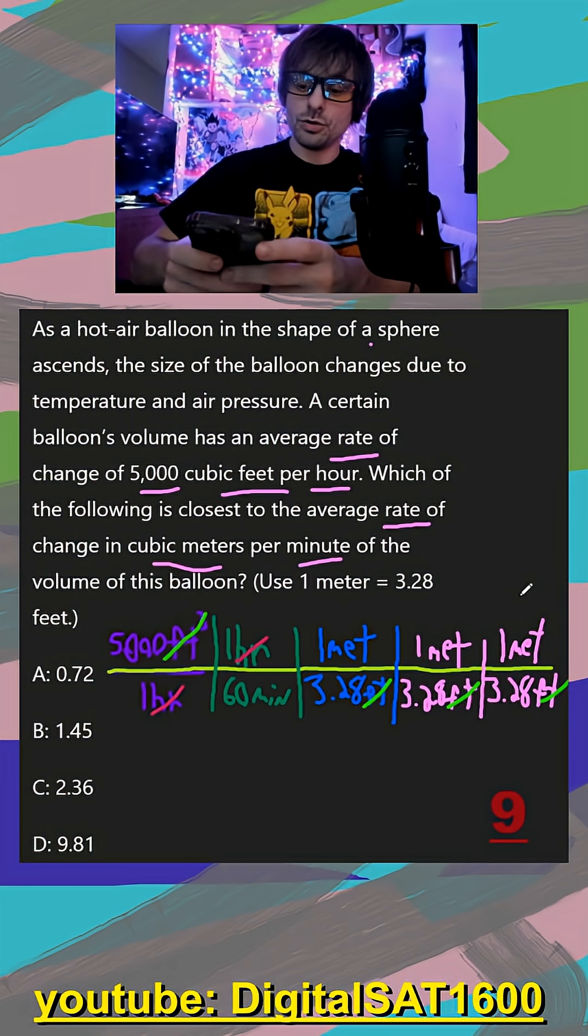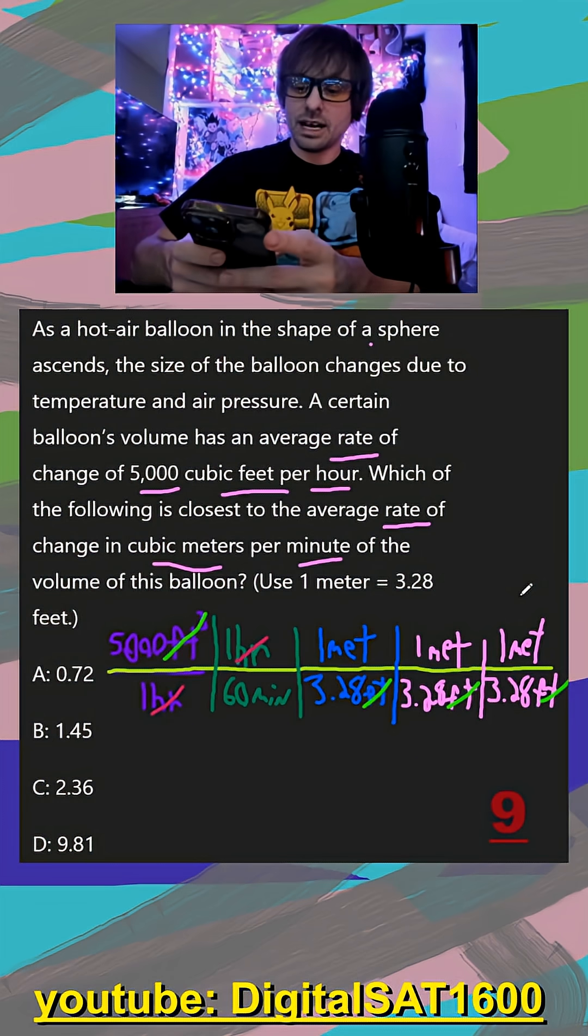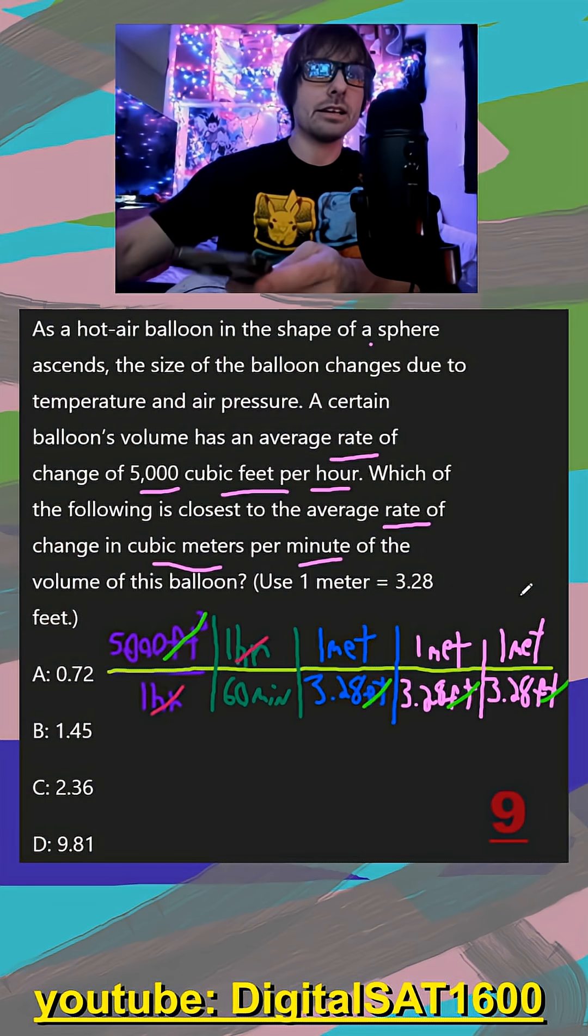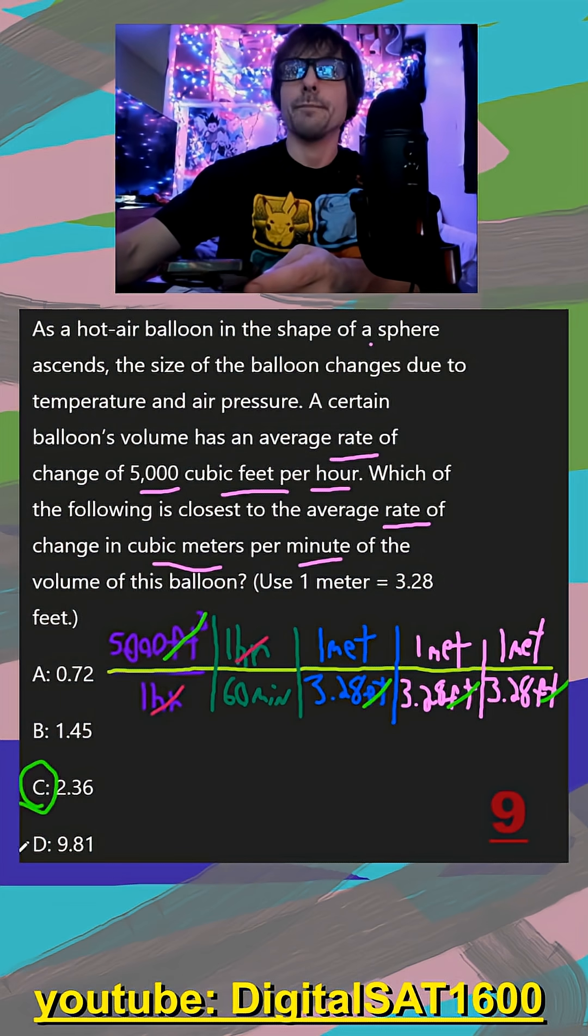So we just want to do the numerator is easy, that's just going to be 5,000. And then I'm going to divide by 60, and I'm going to divide by 3.28 three times. And our final answer I'm looking at here is 2.36 or C.